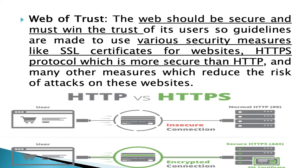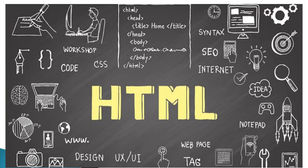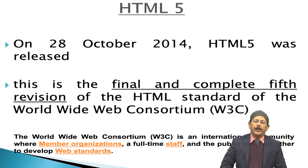The journey of HTML: the first markup language was HTML, finalized in 1991. Different versions followed — HTML+ in 1993, HTML 2.0 in 1995, HTML 3.2 in 1997, HTML 4.01 in 1999, and from 2012 onward, HTML5. HTML5 was officially released on 28 October 2014 as the final and complete fifth version of the HTML standard by the World Wide Web Consortium.